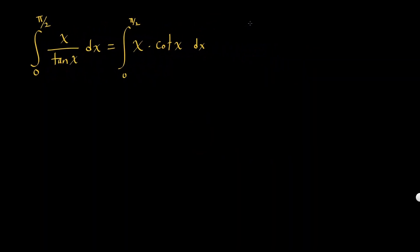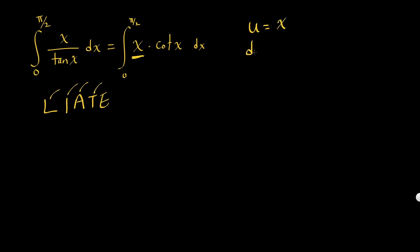I'm going to choose u. Using LIATE — log first, then inverse, algebra before trig — I'm going to let u equal to x. That makes du equal to dx. The other part is dv, so let dv equal to cotangent x. I'm going to change cotangent into cosine x over sine x, and then v is going to be — when you integrate that — it's just natural log of sine x.